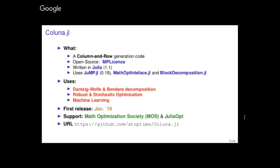Coluna is fully open-source, written fully in Julia, using the latest versions of packages. The use cases for it would be to solve Dantzig-Wolfe and Benders decomposition. There are also, in the future, applications for robust and stochastic optimization. The first release was in January this year, but what I'm presenting doesn't correspond to this release because we are redesigning BlockDecomposition and updating everything, and we also have the support of GLPK.